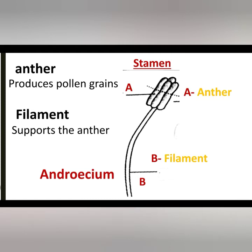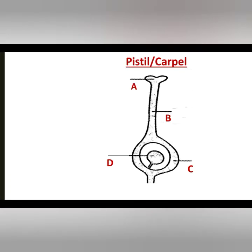We can now move to the female part, which is the pistil or carpel. A quick overview of the parts displayed on the screen: A is the stigma, B is the style, C is the ovary, and D is the ovule.